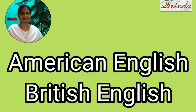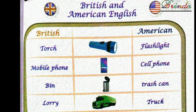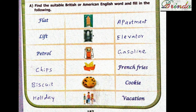Greetings to you all. Welcome to British English and American English. Just to tell a few words about this topic: British English, also known as Received Pronunciation (RP), is what we follow in our country. India follows British English. American English is almost similar — there are slight differences in spelling and pronunciation, but the matter is the same. That is what we are going to see.